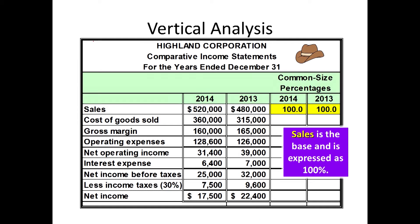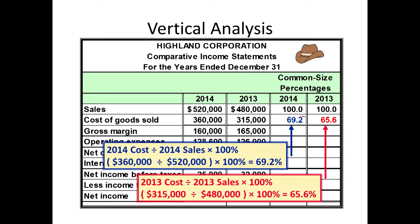Here is their two years of data. We're going to take every number divided by the sales for that year. This 69.2% is achieved by taking 360,000 divided by 520,000. This 65.6% is a way of saying that cost of goods sold for 2013 was 65.6% of sales, and we got that by taking 315,000 divided by 480,000.